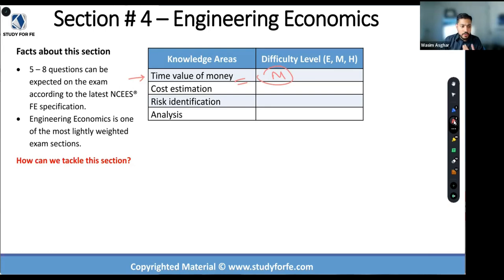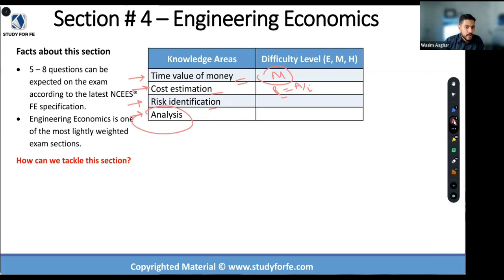Cost estimation — although it has a line item, the key formula is: take the annuity and divide by i, and that gives you the present value. We discussed this in the context of endowment funds — things that rich donors contribute that continue through perpetuity, to time infinity. Risk identification was covered briefly with risk diagrams. Analysis is the big topic, encompassing break-even analysis and cost-benefit analysis, requiring you to move back and forth with present value, future value, and annuities.